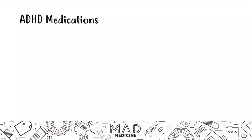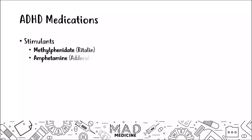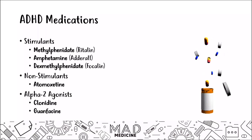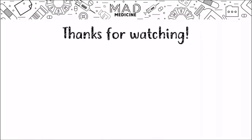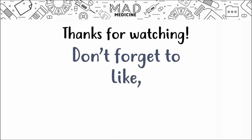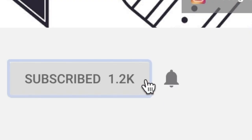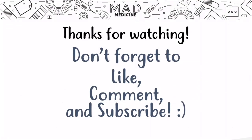Just to recap ADHD medications: in the stimulant category you have methylphenidate, amphetamine, and dexmethylphenidate. In the non-stimulant category you have atomoxetine. And in the alpha-2 agonist category you have clonidine and guanfacine. With that being said, ladies and gentlemen, we have covered ADHD completely. Thank you so much for watching — don't forget to like, comment, and subscribe, and hit the bell notification so you get notified every time we post a new video. We will see you guys back here real soon.